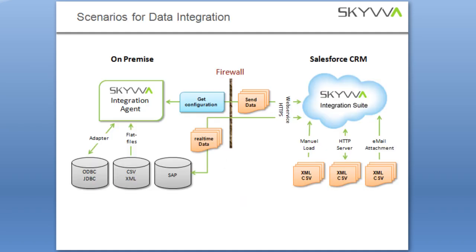Looking in detail at how the integration agent works: the integration agent can be installed behind your firewall on a Windows server. The integration agent can connect via an ODBC or JDBC adapter directly with a database. We can connect to an Oracle database, a MySQL database, a Microsoft SQL server, or other ODBC sources like an Access database.